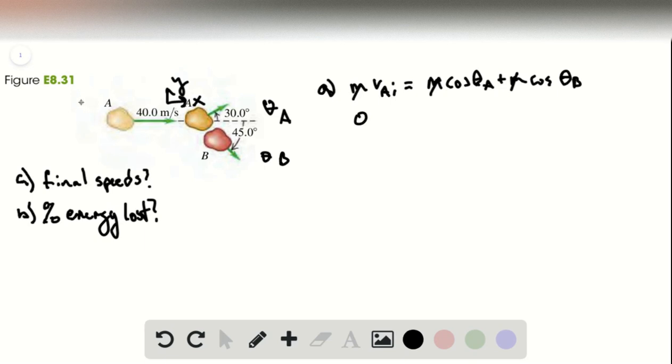Now in the y-direction there's initially zero momentum, because this asteroid is only moving in what we're calling the x-direction. So then zero is going to be equal to M sine theta A. Oh, my apologies.